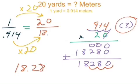18.28 right there. 18 and 28 hundredths as my answer for the number of meters that we would have in 20 yards. So 20 yards should equal up to 18.28 meters.